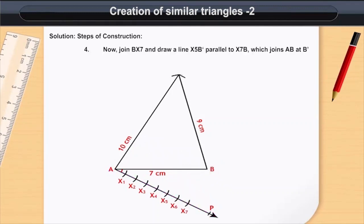Now, join B X7 and draw a line X5 B dash parallel to X7 B which joins AB at B dash.